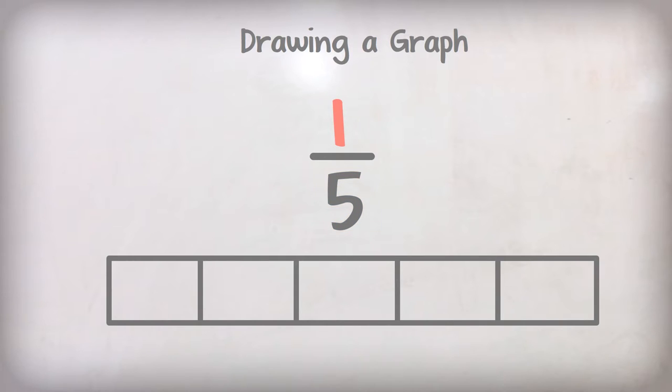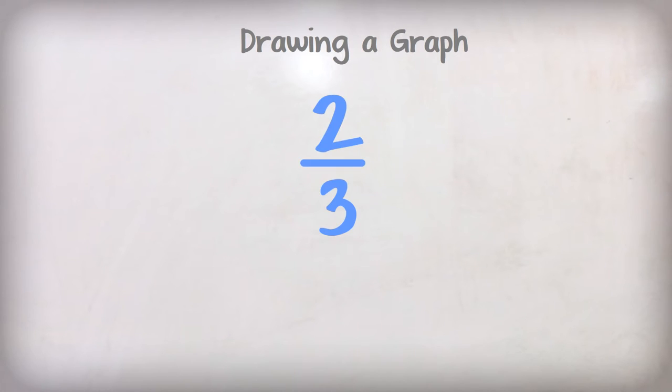The numerator is the number of boxes we will fill on our graph. In one-fifth, one is the numerator, so we will fill in one box. Let's do the same with two-thirds.